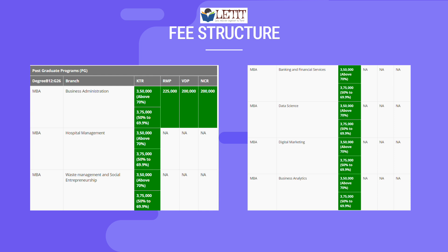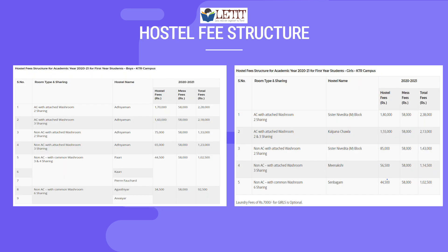For fee scholarships, students scoring above 70% can see the details on the exact website. Students scoring between 50% to 69.9% can see a scholarship of approximately 25,000. For the hostel fee structure, there are different room options — the left side shows boys' hostel fees and the right side shows girls' hostel fees.